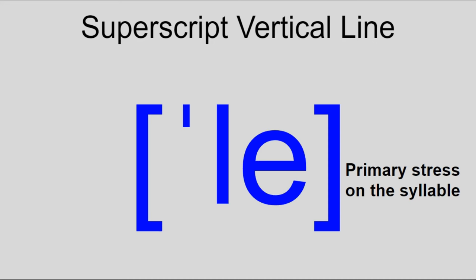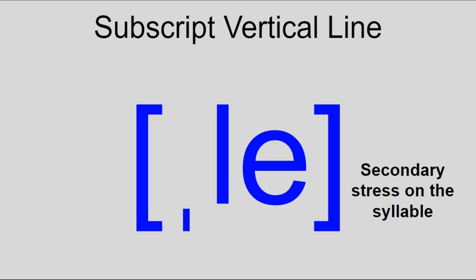Finally, for vowel diacritics, stress is indicated by a vertical line before the affected syllable — superscript for primary stress, and subscript for secondary stress.